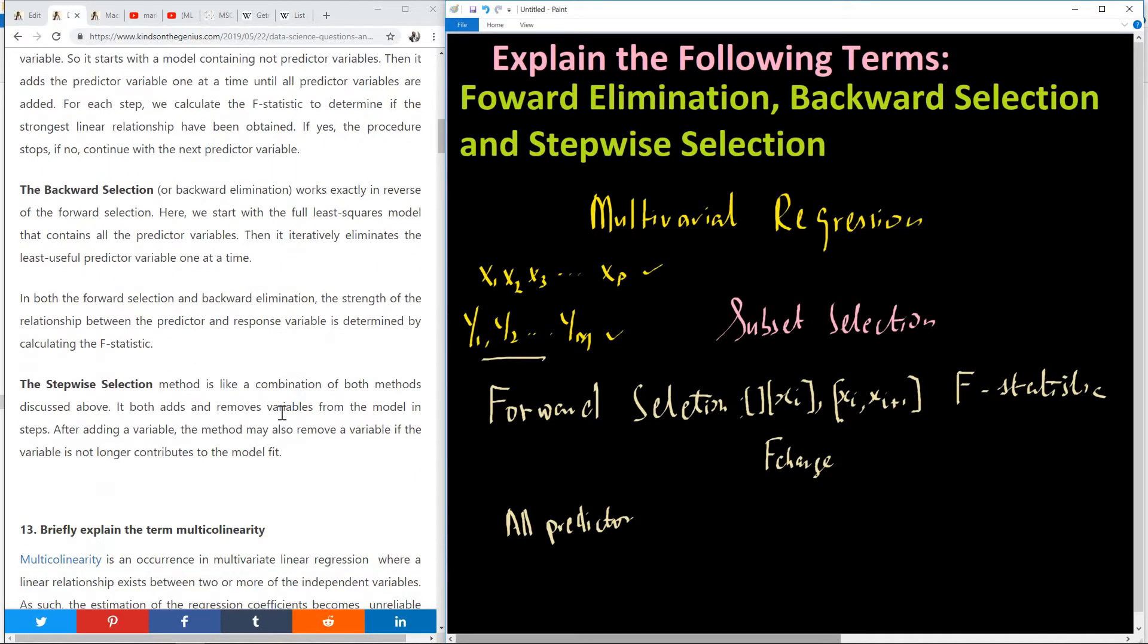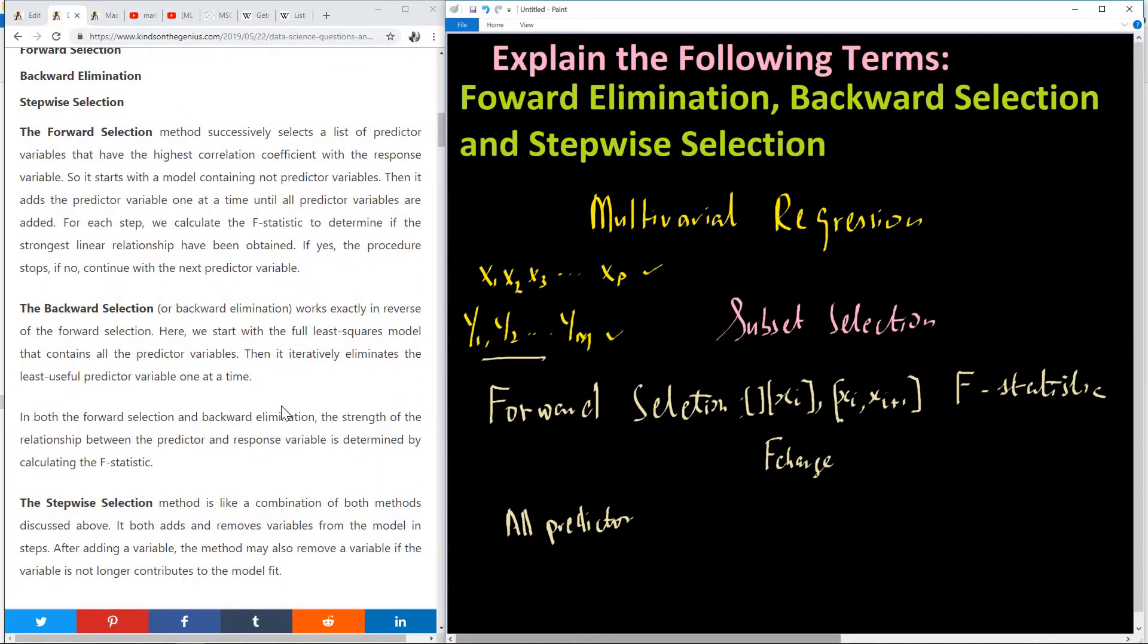So let's now look at the stepwise selection. So this stepwise selection is an attempt to combine both methods. So stepwise tries to combine both methods, both forward selection and backward selection. So in this case, we are not adding everything at the same time. We are not also removing all the variables at the same time. What we are doing is we are adding and removing. So once we add one variable, we check the effect, we remove variables and check the effect. So we can actually be adding and be removing alternatively until we get the strongest relationship between the predictor variable and the dependent variable. So after adding a variable, the model may remove a variable if the variable is no longer contributing to the model fit.